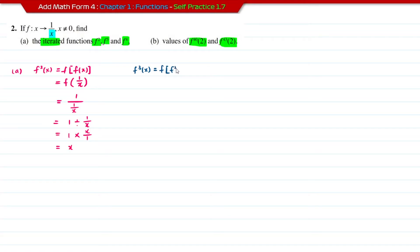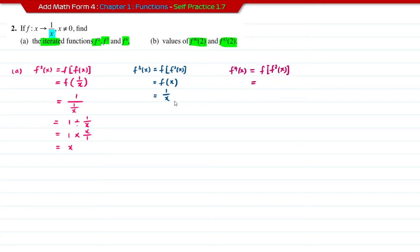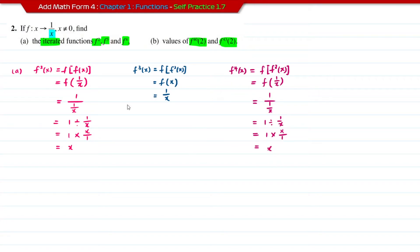f³ is formed by inserting f² into f. f² is x, so inserting x into f gives 1 over x. For f⁴, insert f³ into f: f³ is 1 over x, so we get 1 over (1 over x), which is 1 divided by 1/x, giving x over 1, so f⁴ = x.